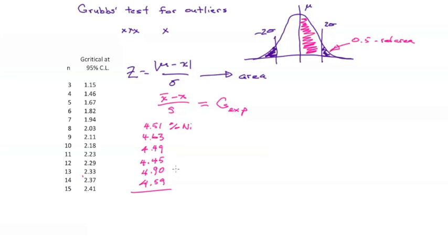We see that they cluster together except for this particular point. This looks suspicious. Is this an outlier? Well, let's apply Grubbs' test.